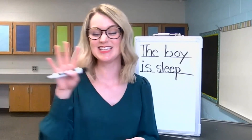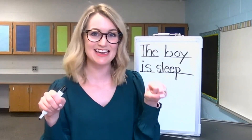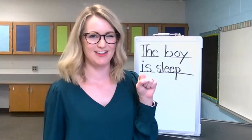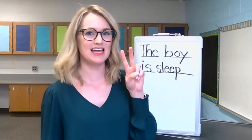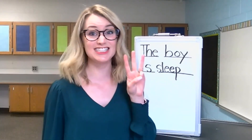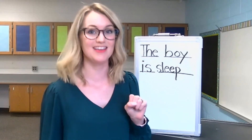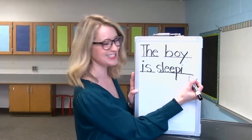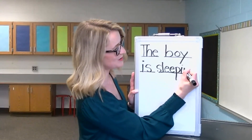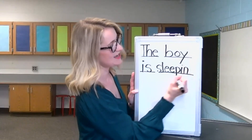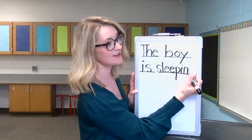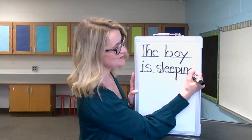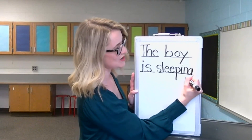Now we need to do the second part to turn 'sleep' into 'sleeping.' The last part is '-ing.' This part's tricky. Let's stretch it out: I-ng. There are three sounds in that part. I is the first sound — that's an I. I-ng — the next part's an N: start in the middle, go down, back up, and make a hump. And our last part, '-ing,' there's a G at the end — that part's a little tricky to hear. Start in the middle, make a C, close it, and make a tail.